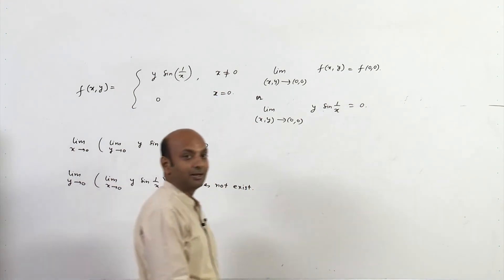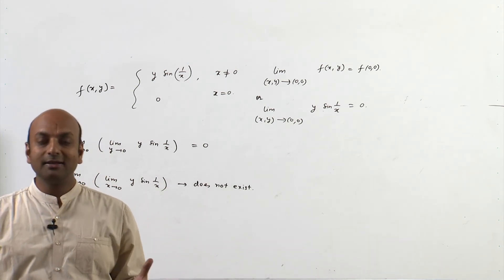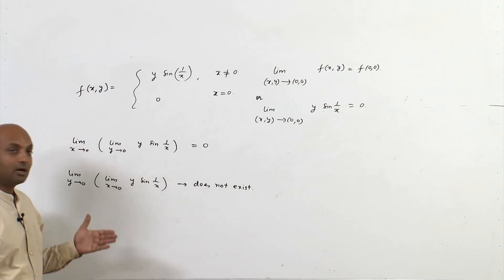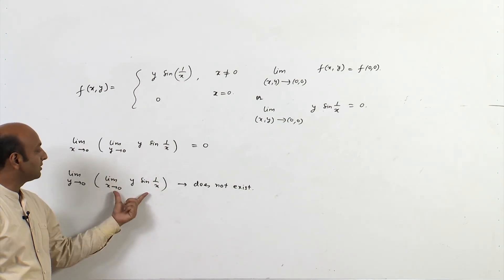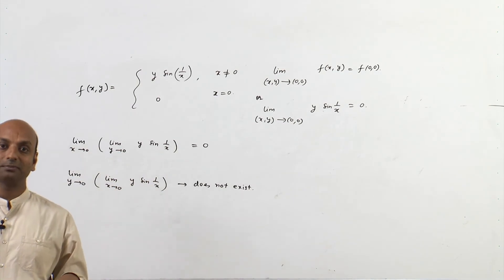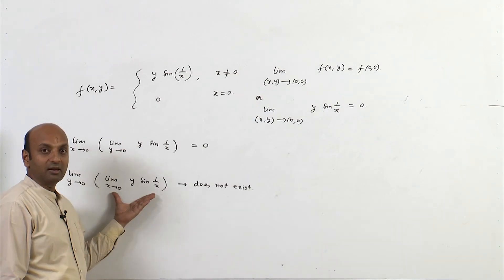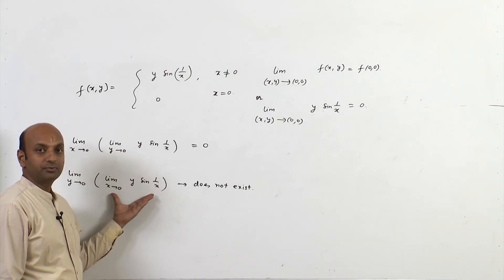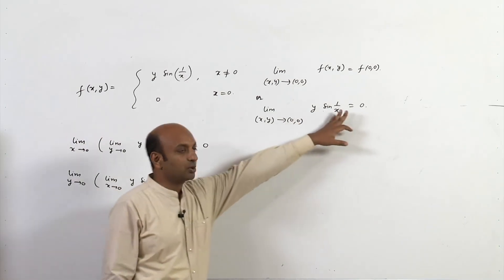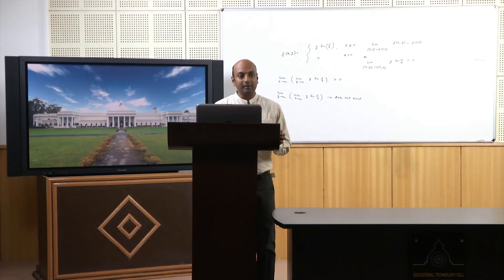The reason is: the implication that if the double limit equals L then the iterated limits are also equal to L holds only when the inner limit exists. Here one iterated inner limit does not exist, so that implication does not hold. These iterated limits are not equal, yet the double limit still equals 0. That is all about limits and continuity of several variable functions. Thank you.